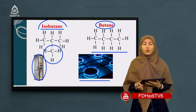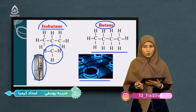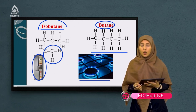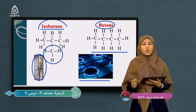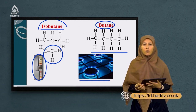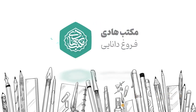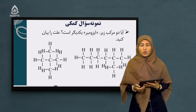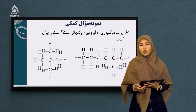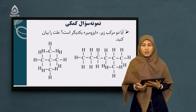پس ببینید که فرمول ساختمانی چقدر مهم و با اهمیت هست. پس ایزومیرها دارای فرمول مالیکولی یکسان اما فرمول ساختمانی متفاوت می‌باشند، که همین متفاوت بودن فرمول ساختمانی باعث می‌شه که دارای خواص و ویژگی‌های متفاوتی باشن. حالا می‌خواهیم یک سوال با هم در رابطه با ایزومیرها کار کنیم.